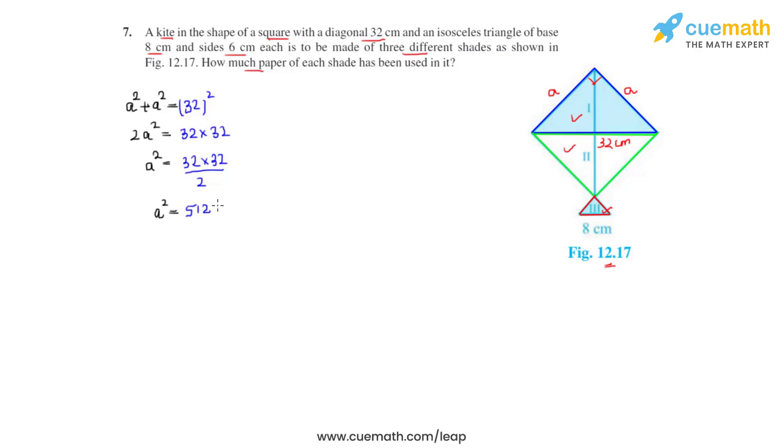Now as the diagonal divides the square into two equal triangles, the area of region 1 will be equal to 512 divided by 2, so that comes as 256 centimeter square.